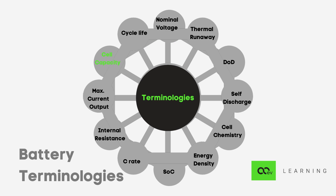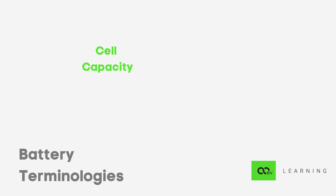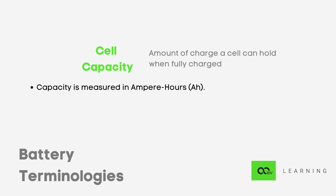Next is cell capacity, which is the amount of charge a cell can hold when fully charged. It is expressed in ampere hours — ampere corresponds to current and hour corresponds to time. So one ampere hour means the cell can deliver one ampere of current for one hour. Cell capacity is an important health indicator of a battery.